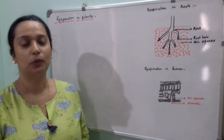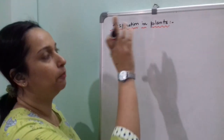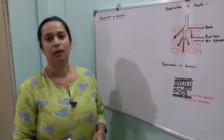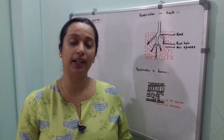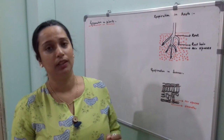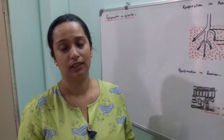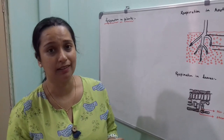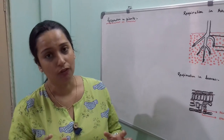Hello students, today our topic of discussion would be respiration in plants. Like animals, even plants also undergo the process of respiration. Plants require energy, and to get that energy, the plant must undergo the process of respiration. In case of plants, respiration occurs through the simple process called diffusion, because plants have a large surface area when compared to their volume.